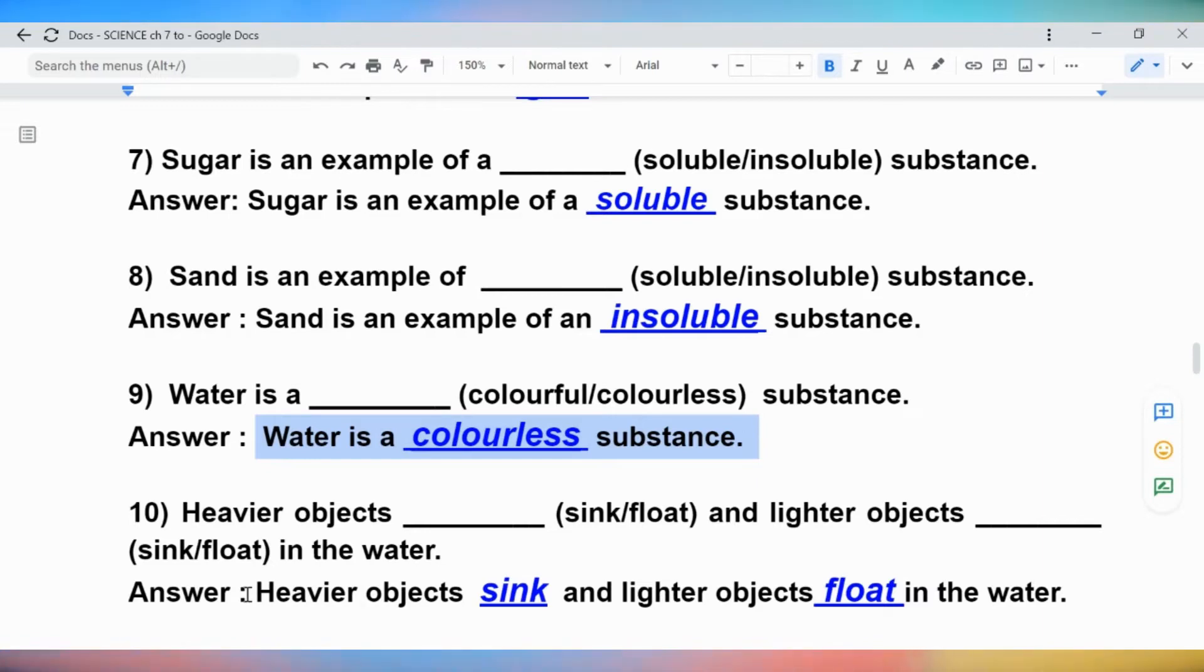Question 10: Heavier objects blank (sink/float) and lighter objects blank (sink/float) in the water. Answer: Heavier objects sink and lighter objects float in the water.